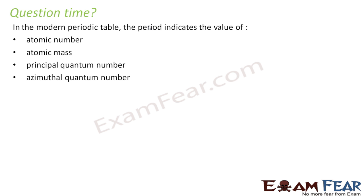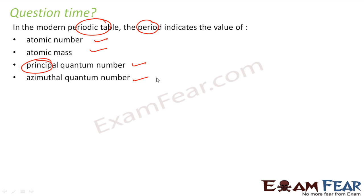The question asks: in the periodic table, the period indicates what — atomic number, atomic mass, or principal quantum number? We have seen that the period is nothing but the maximum value of n, and n is the principal quantum number.